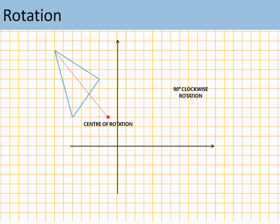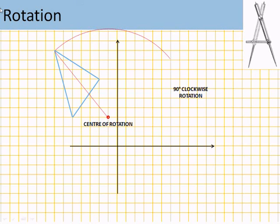So, for example, if the point marked here is the centre of rotation, we need to draw a line to each point, measure the number of degrees that we're rotating it using a compass. I've put the centre of my compass at the centre of rotation, and then I've drawn a curve.